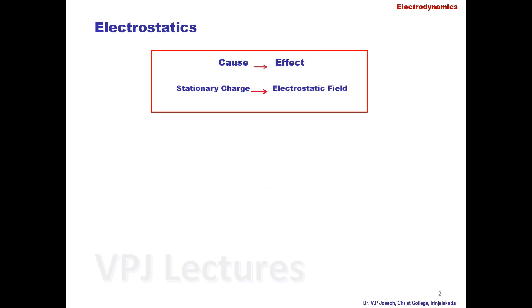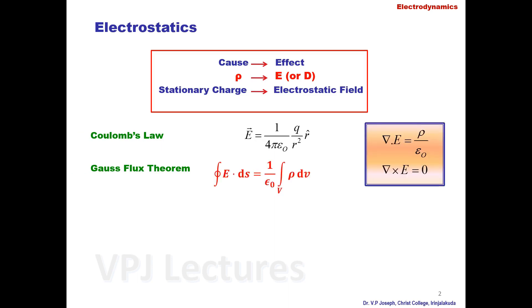This is a second lecture related to electrodynamics. In the first lecture we considered the basics of electrostatics, and in this video we will consider the fundamentals of magnetostatics. Before doing so, let us summarize electrostatics: any electrostatic problem may be represented as a cause-effect principle with static charge rho as the cause and electrostatic field E as the effect. There are two methods to find the effect — Coulomb's law and Gauss's flux theorem, with both integral and differential equations.